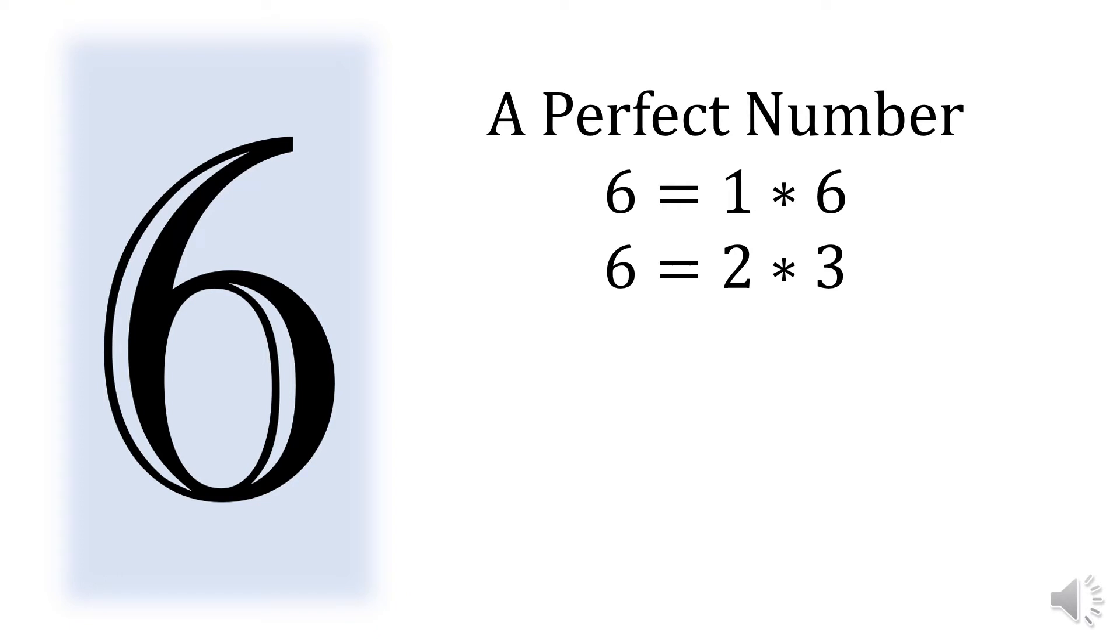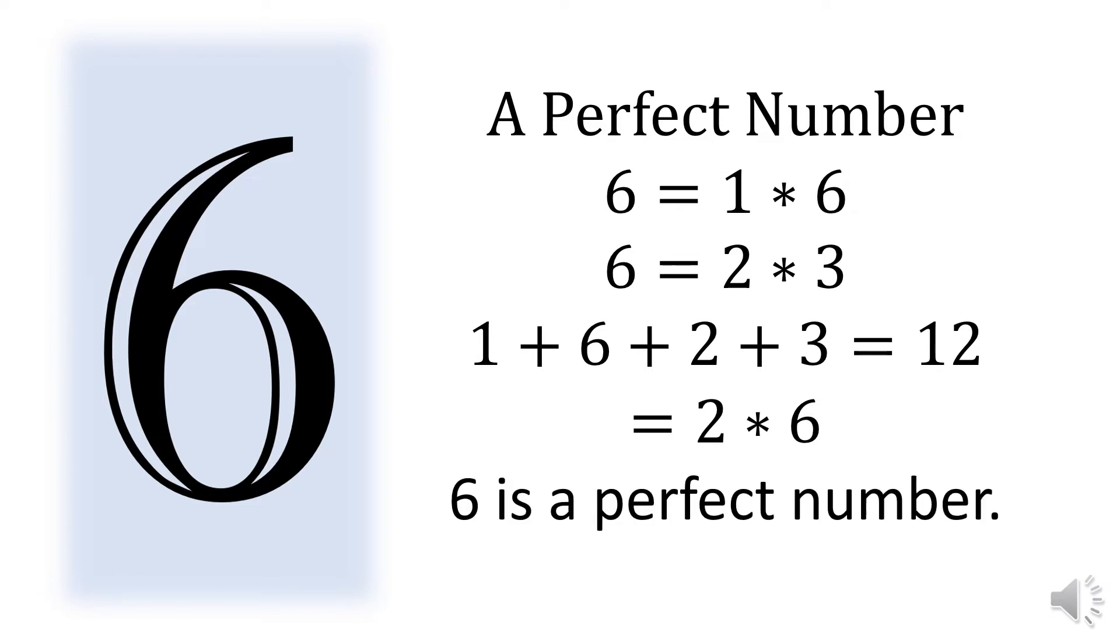Take the number six. Six is one times six and two times three. These factors are called divisors. Add all divisors of six: one plus six plus two plus three equals twelve. Since the sum of divisors of six is twelve, or twice six, then six is perfect.